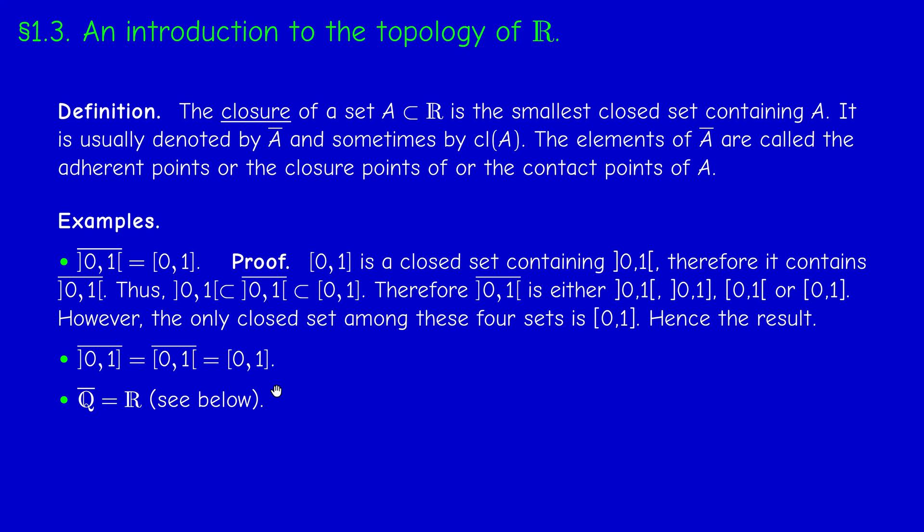Now the closure of Q is more complex, actually. We shall prove it. It's not as easy as the previous examples. But we shall prove that, we shall prove it in the next video actually. We shall prove that the closure of Q is R. So the smallest closed subset containing Q is R itself. Of course, it cannot be Q because Q is not closed. Why Q is not closed? Because R without Q is not open.